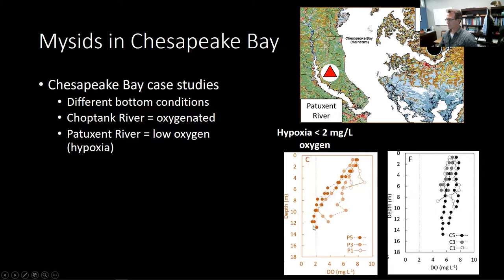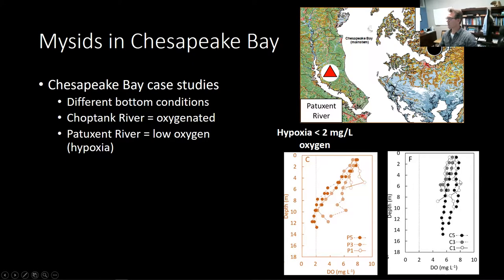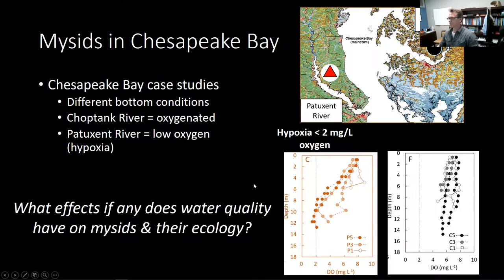There's a lot of bacterial respiration and decomposition that can use a lot of the oxygen in those deep waters. Some stations and areas in Chesapeake Bay drop down below two milligrams per liter of oxygen — that two milligrams per liter threshold is usually what we consider detrimental to aquatic life, and we call that hypoxia. If we look at a similar plot from the Choptank River, we can see that in all instances, as you move down the water column even to 16 or 14 meters, we never get close to that two milligram per liter threshold. So these two systems are similar in a lot of ways, but they're different in the quality of that bottom water habitat.